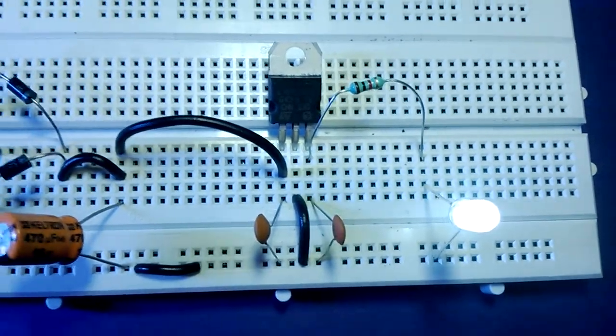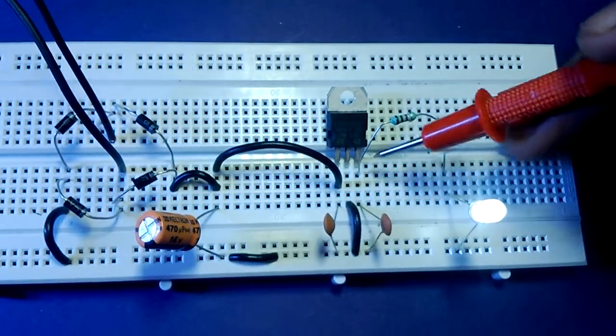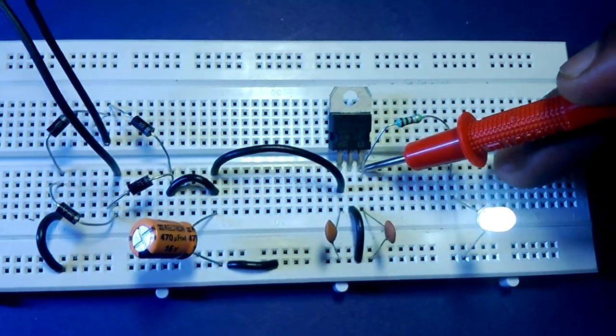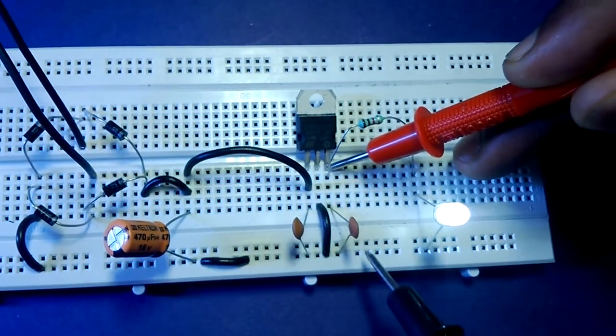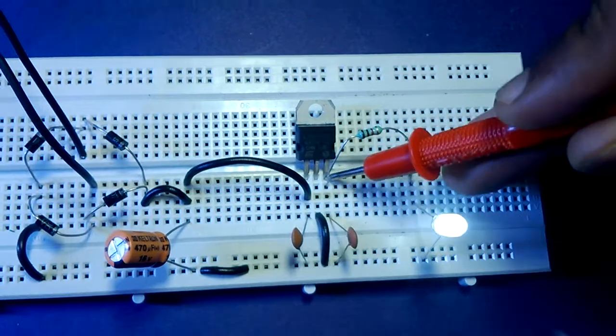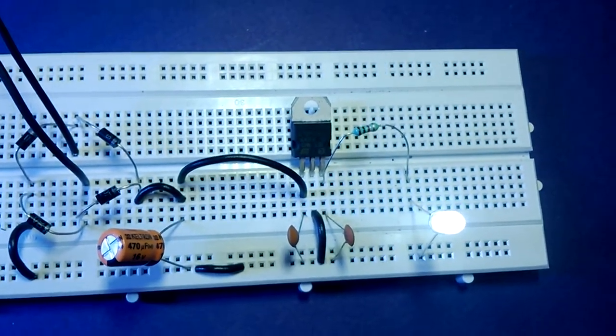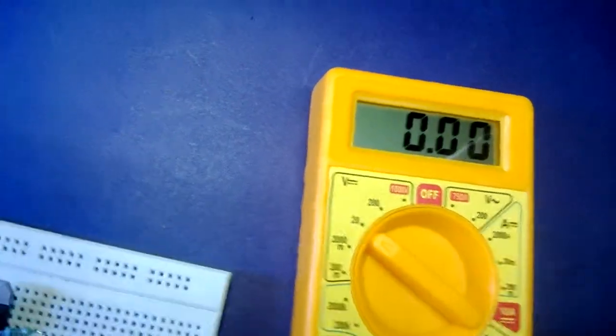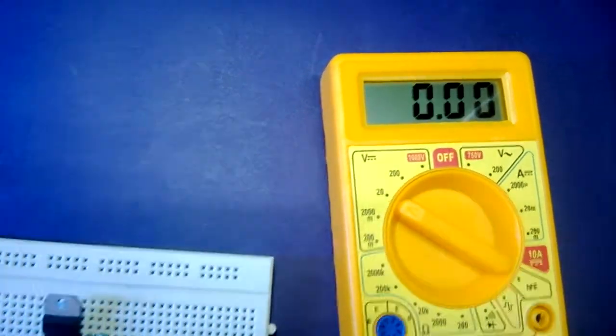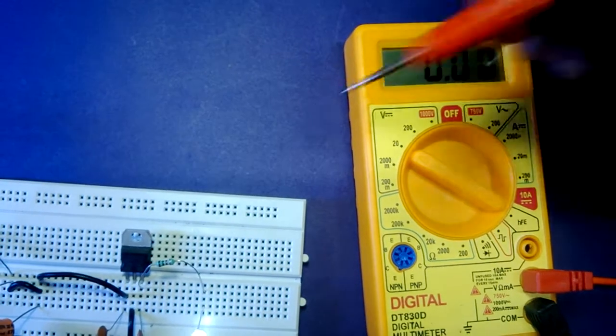Now we're going to check out the output voltage of this voltage regulator. Look at this point - we are checking it here. I will show you the demonstration of how we can measure this output voltage. You can see the multimeter reading - this is zero reading.